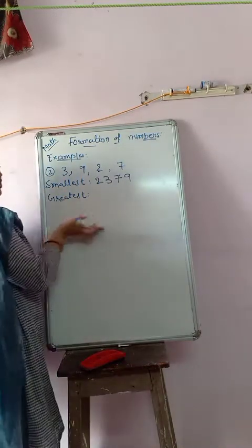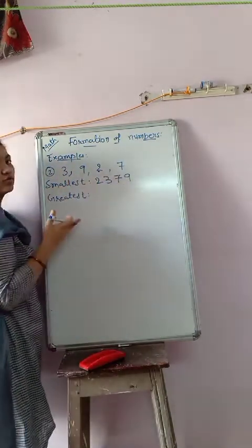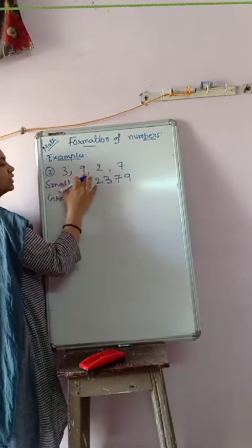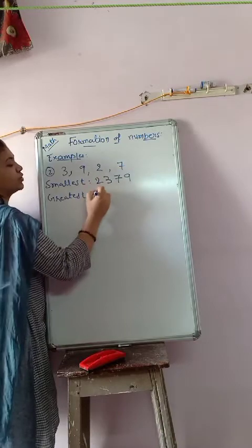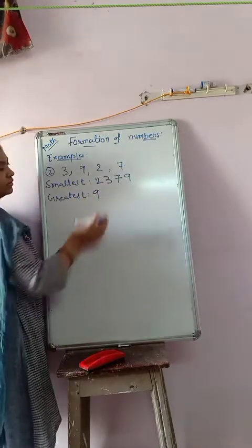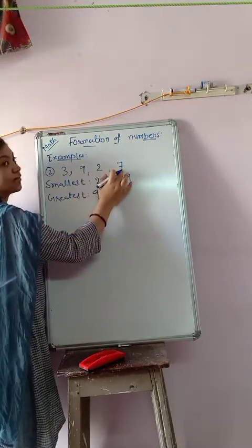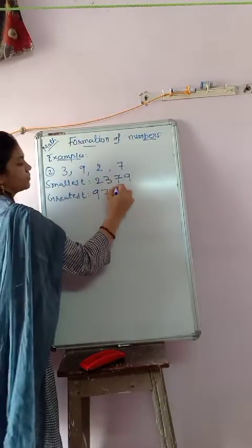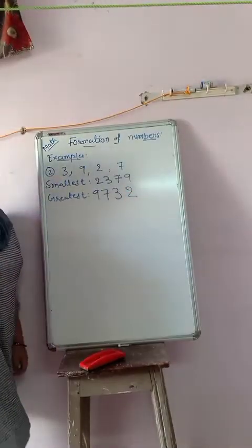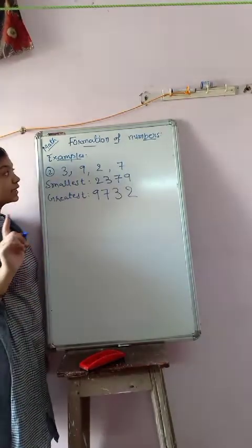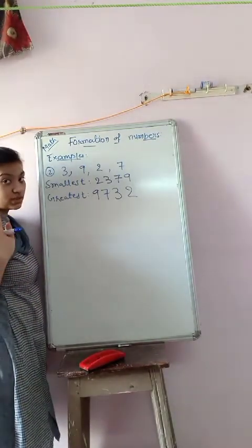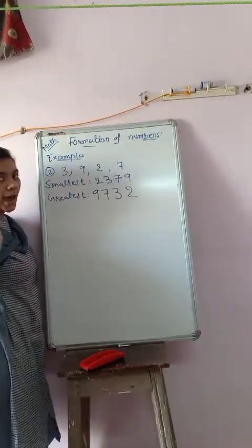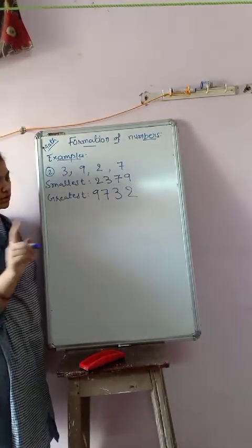The greatest is the opposite of the smallest, so arrange in descending order. From 3, 9, 2, 7 — 9 is first. Then from 7, 3, 2 — 7 is next, then 3, then 2. So the greatest four-digit number is 9732. Remember, we are creating four-digit numbers.